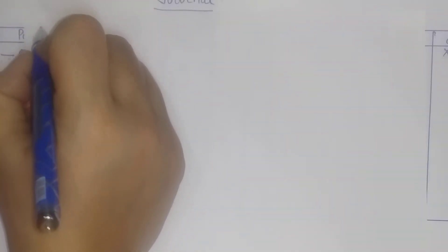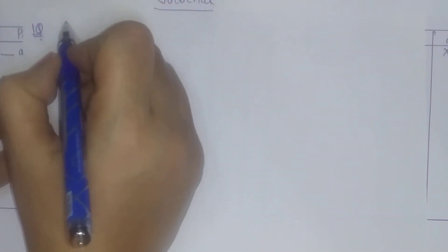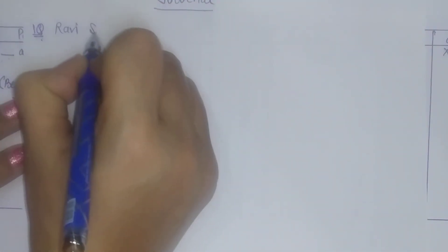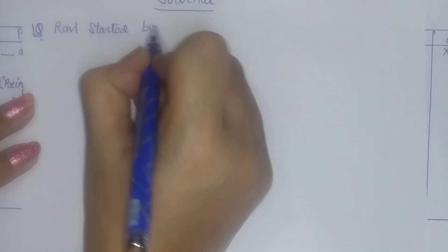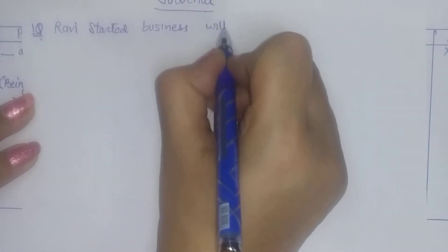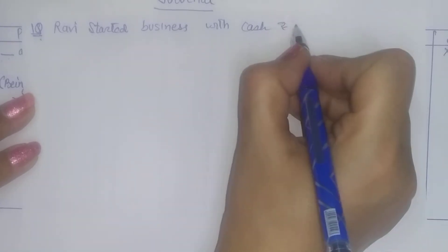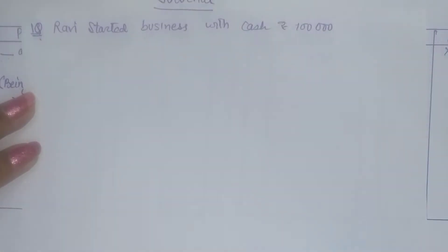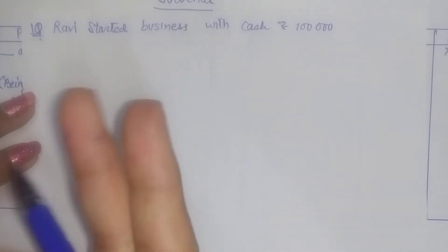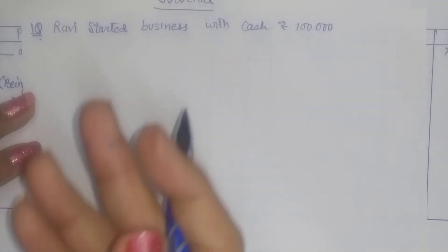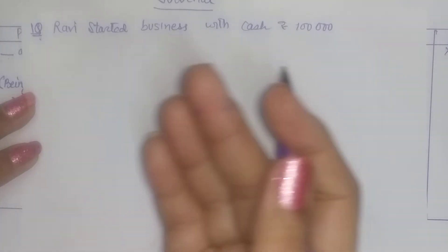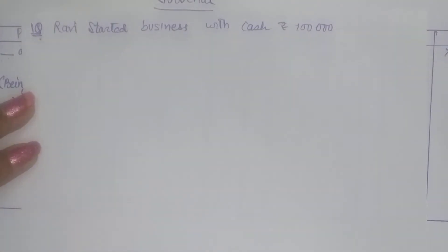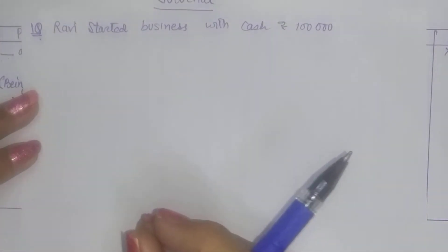Suppose we are given the transaction: Ravi started business with cash of rupees 1 lakh. Now the way to understand the dual effect of any transaction is through the language of business: lena-dena (give and take). I have been focusing from the beginning that the way to make every entry and understand every transaction is to think of it in business language. And the language of business is lena-dena.